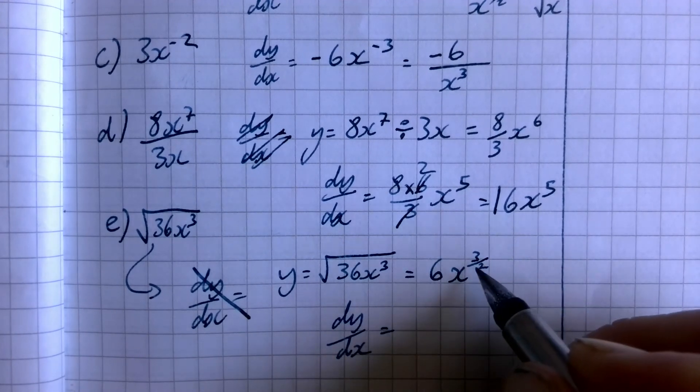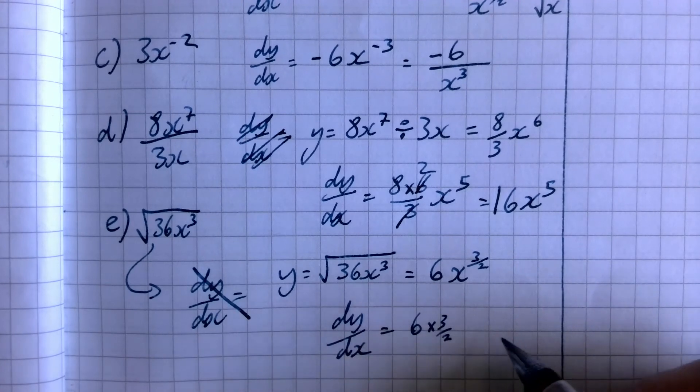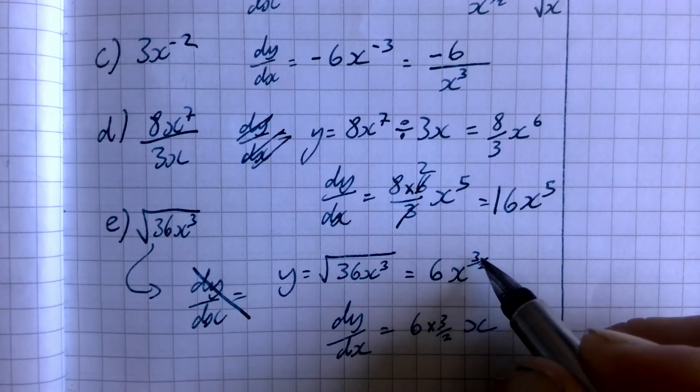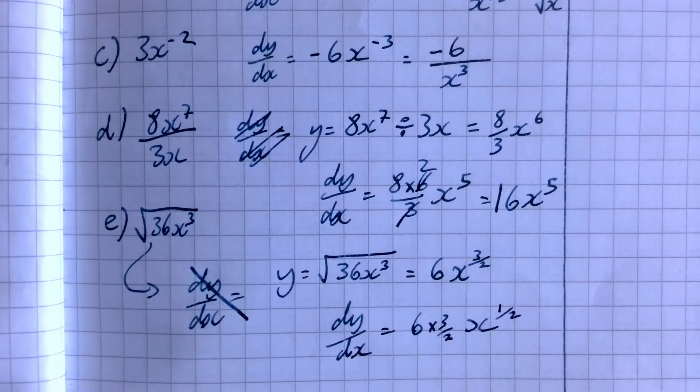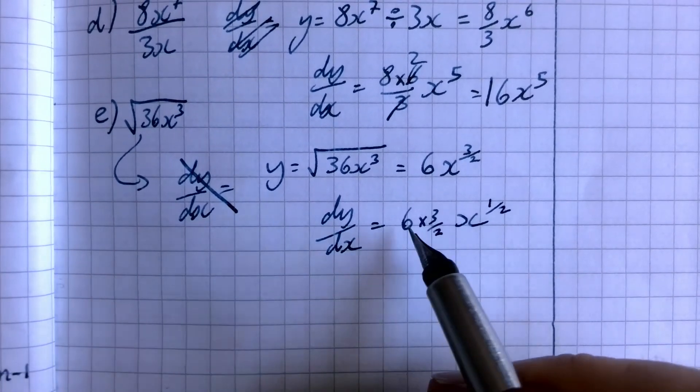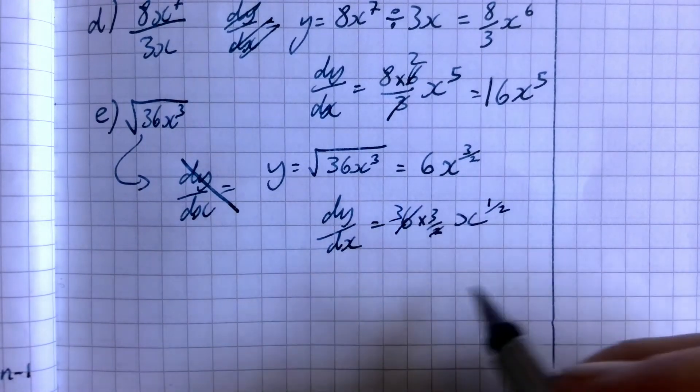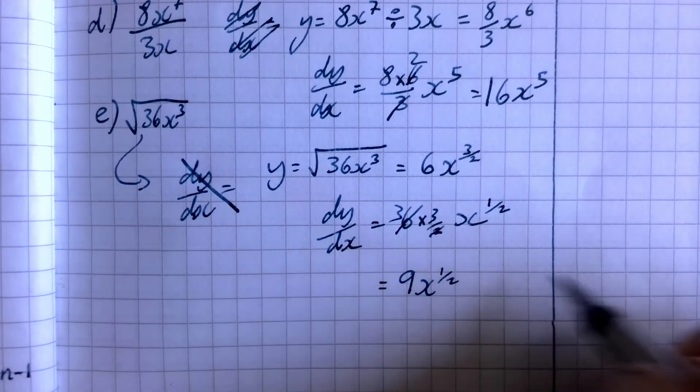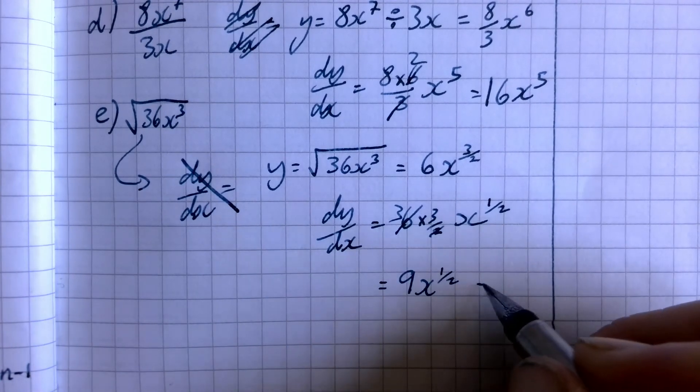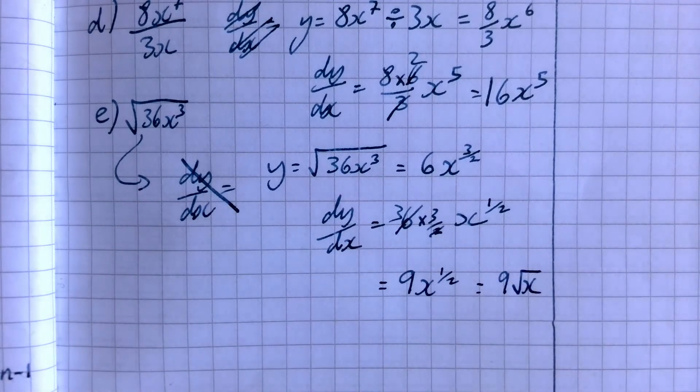Then have a look and see if we can sort this out. Six times three over two, or two goes into six three times. So we get three times three is nine x to the power half. But you can also write as nine times the square root of x.